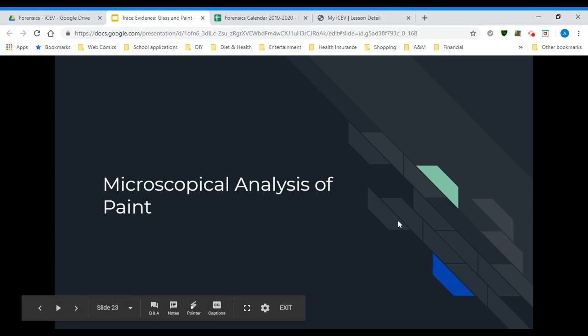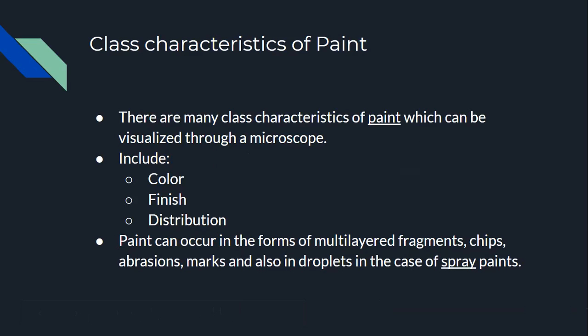Next we'll talk about the microscopical analysis of paint — characteristics of paint which can be visualized through a microscope. Class characteristics means we can narrow the paint down to one type but not necessarily a single source. These class characteristics include the color of the paint, the finish of the paint, and the distribution of the paint.